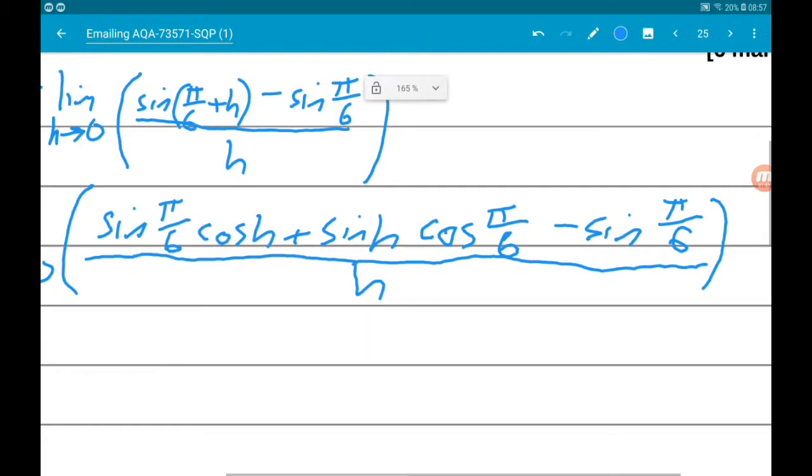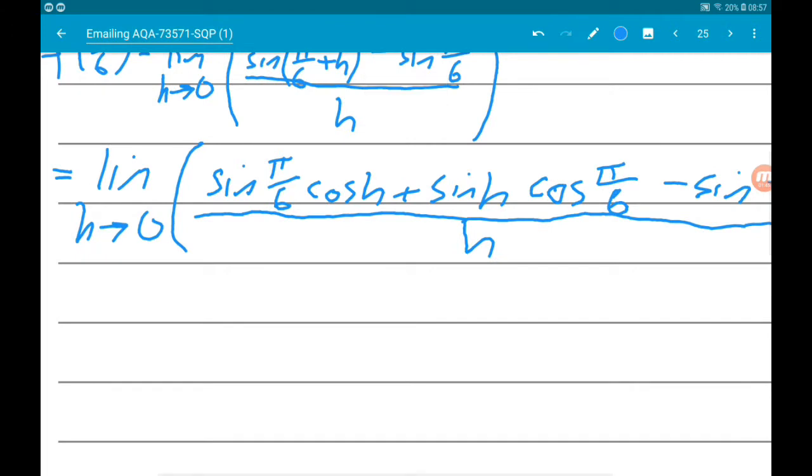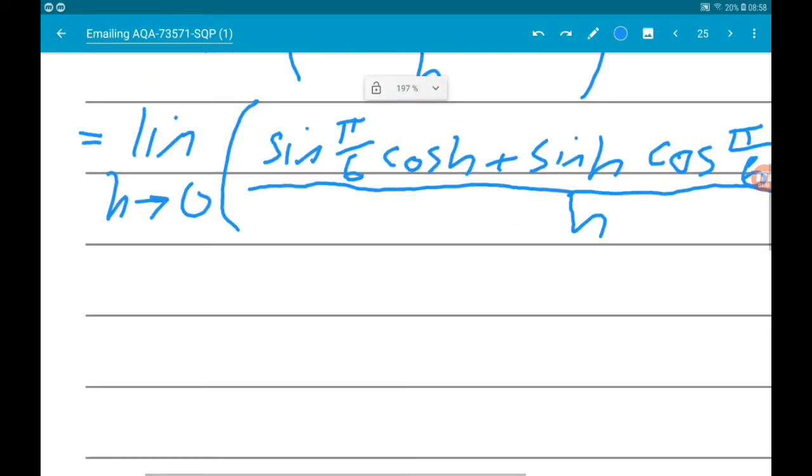Okay, so we can start making this look a bit nicer now. Sine of pi by six is a half, cos of pi by six is root three over two.